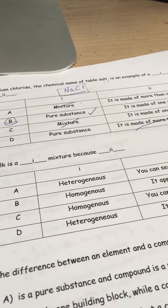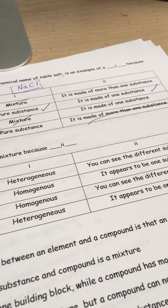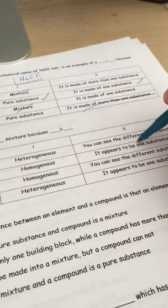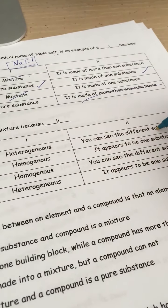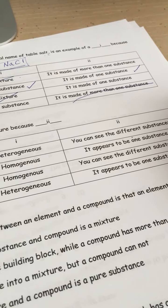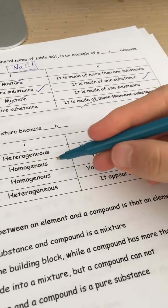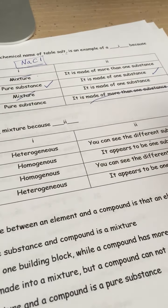Milk is a what mixture because of why? Without even reading the question, let's figure out which ones don't belong here. Heterogeneous, can you see different substances? That's true. Homogeneous, it appears to be one substance. That's true.